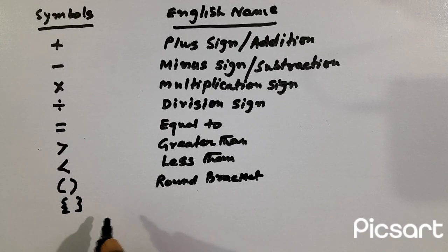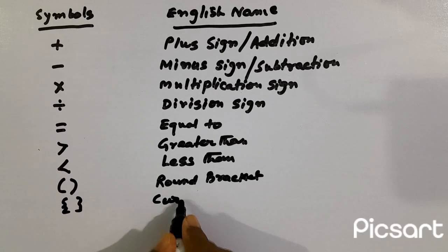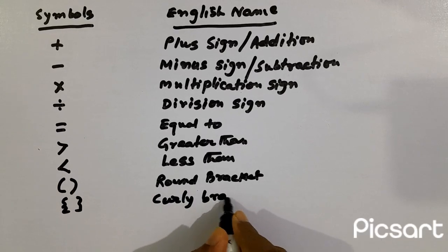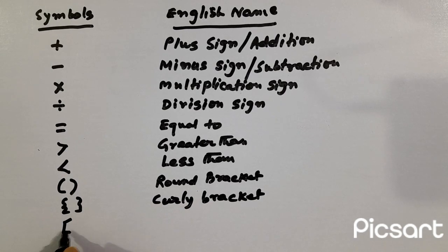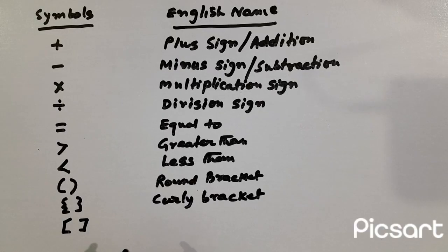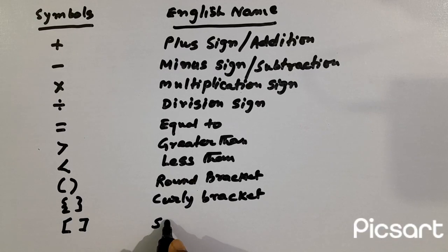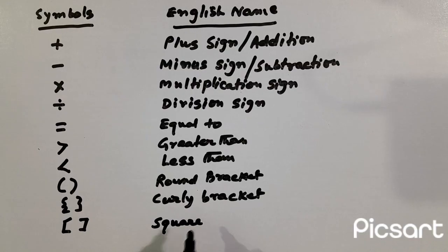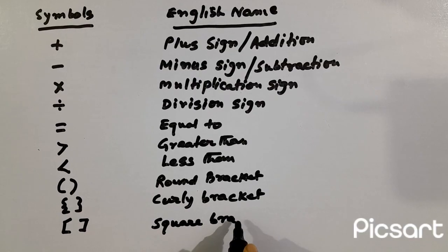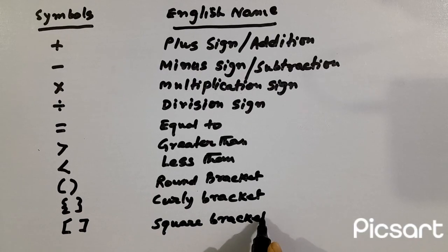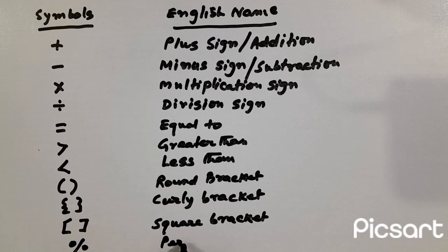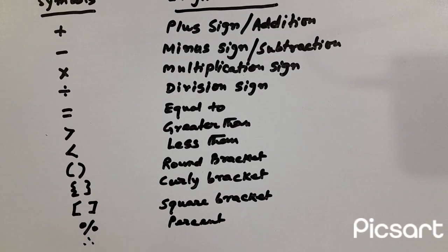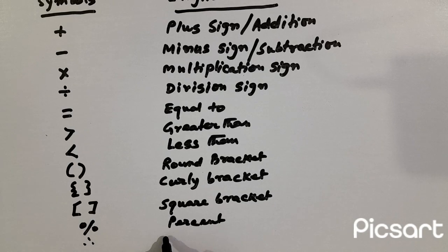This is called curly bracket. This is called square bracket. This is called square bracket. This is called therefore.